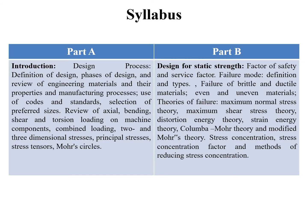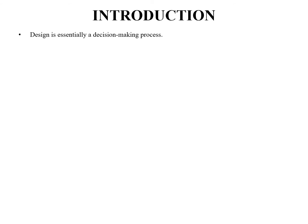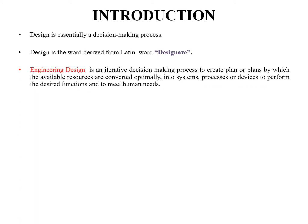Coming to the introduction: design is essentially a decision-making process, derived from the Latin word 'designere.' Engineering design is an iterative decision-making process to create plans by which available resources are converted optimally into systems, processes, or devices to perform the desired functions.